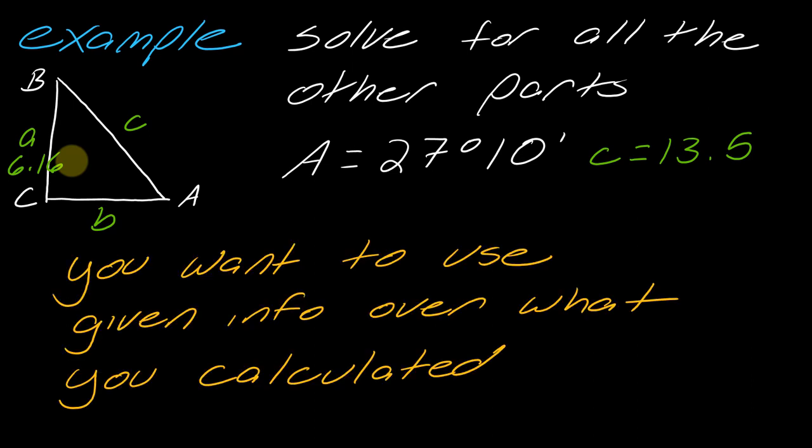A note: you might be tempted to use this 6.16 now in our calculations and say, oh, I could use Pythagorean theorem to figure out b. The thing is that you want to use given info over what you calculated whenever possible. It's true I could figure out what b is by doing a squared plus b squared equals c squared, but it would actually be more accurate to use the given information. That is the preference.